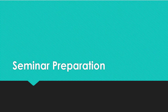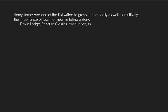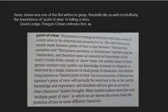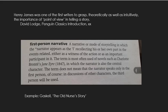In the rest of this video, I'm going to do a close reading of the second paragraph of the novella to prepare you for your seminar activities. In the introduction to the Penguin Classics edition of Daisy Miller, David Lodge writes that Henry James was one of the first writers to grasp, theoretically as well as intuitively, the importance of point of view in telling a story. Point of view, Lodge says, is a fundamental choice that will determine the meaning and effect of any story. As the Oxford Dictionary of Literary Terms tells us, the point of view of a story is the position or vantage point from which the events of a story seem to be observed or presented to us. The chief distinction usually made between points of view is that between third-person narratives and first-person narratives. A first-person narrator's point of view will normally be restricted to his or her partial knowledge and experience, and therefore will not give us access to other characters' hidden thoughts.